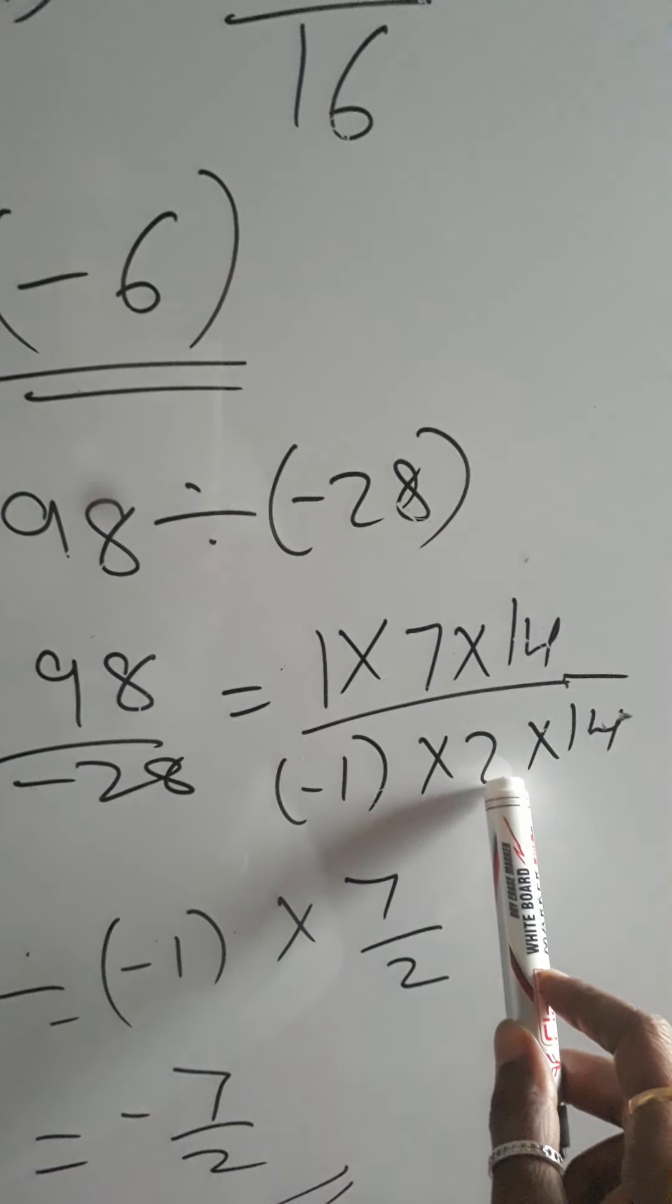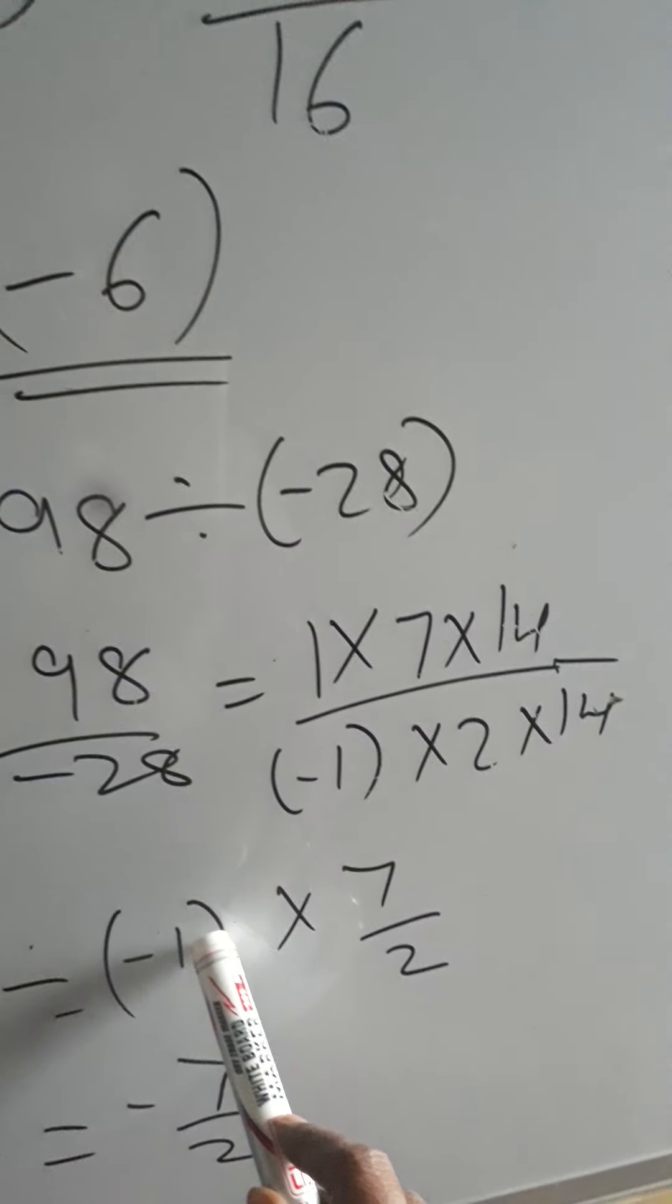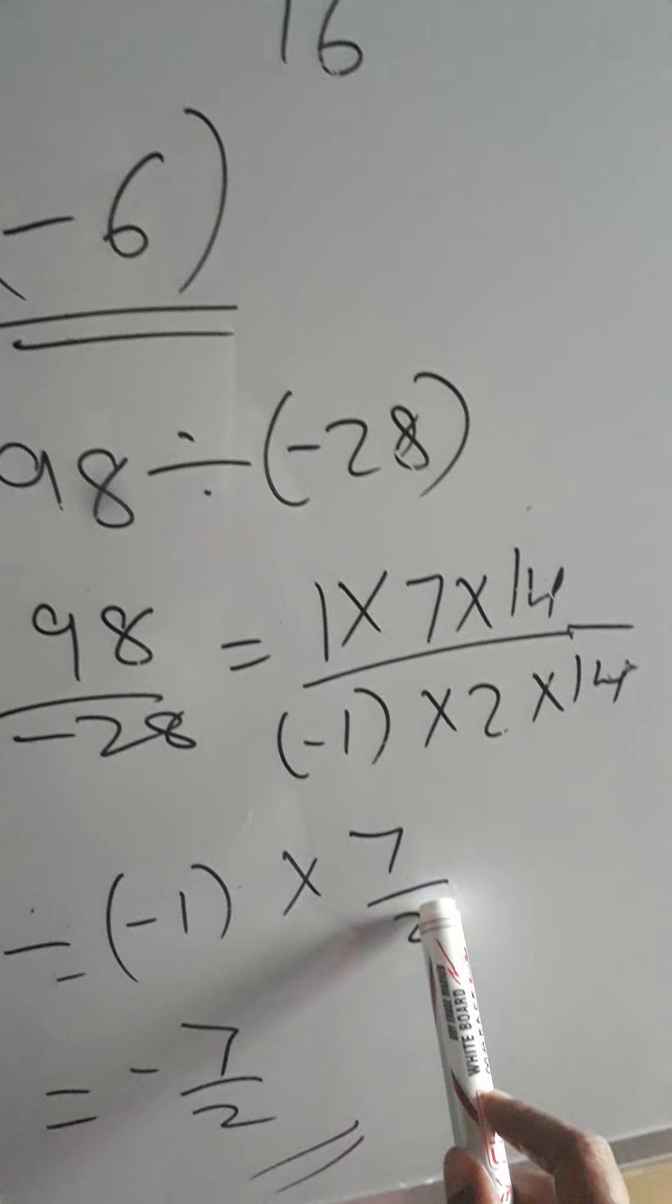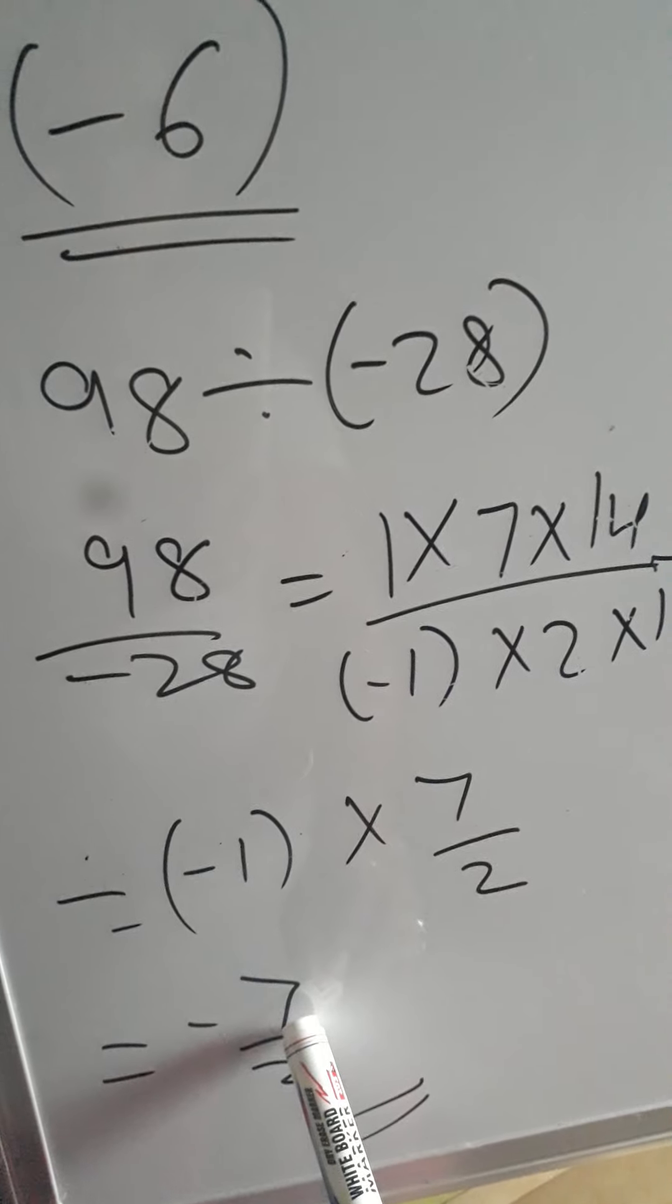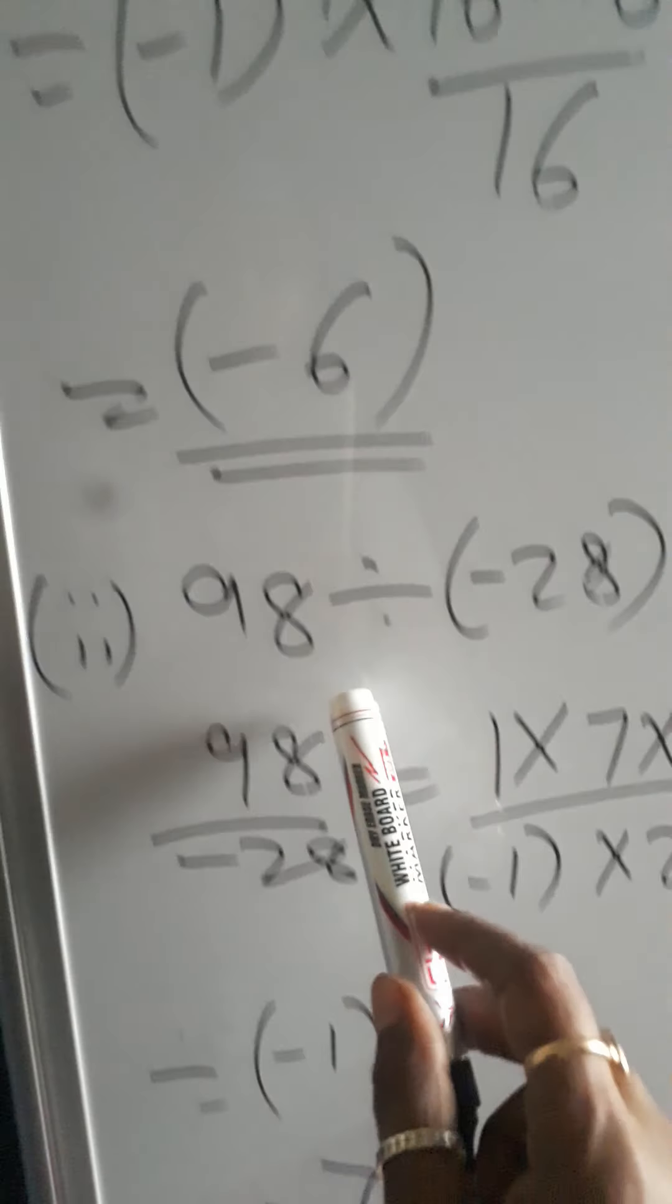So we are left with 7 upon 2. So minus 1 into 7 upon 2 will give me answer minus 7 upon 2.